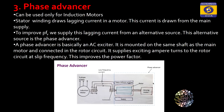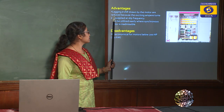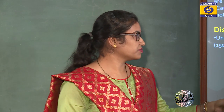The next method is the phase advancer, which is basically used with induction motors. An induction motor draws an exciting lagging current. To provide excitation current from an external source, the phase advancer is coupled to the induction motor on the same shaft. Advantages: the lagging reactive current drawn by the motor is reduced because the exciting ampere-turns are supplied at slip frequency. It is economical for motors rated above 200 horsepower.